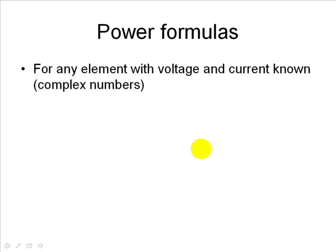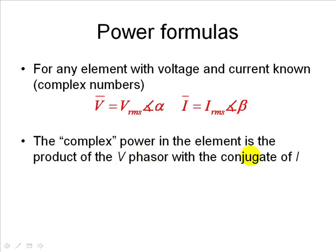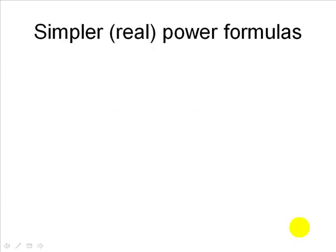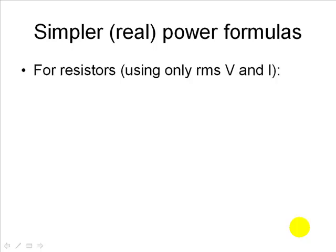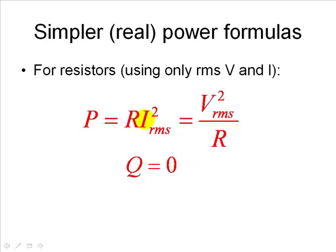Let's review formulas for power in AC circuits. For any element with known voltage and current phasors — V at phase alpha and I at phase beta — the complex power is the product of phasor V with the conjugate of phasor I. For resistors, we only need RMS volts and RMS amps; the reactive power Q is always zero — resistors don't play ping pong — and active power P equals I²R or V²/R.